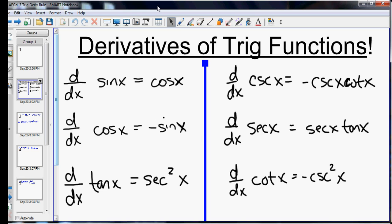The derivative of tangent is secant squared. The derivative of cotangent is negative cosecant squared. So you notice tangent and cotangent both have a squared in their answer. Tangent goes with secant squared. Cotangent goes with cosecant squared.